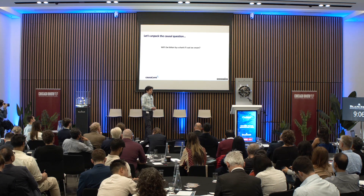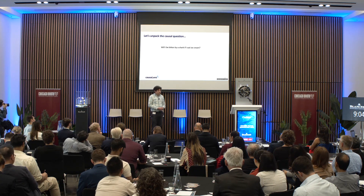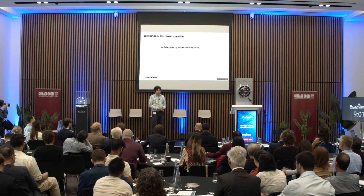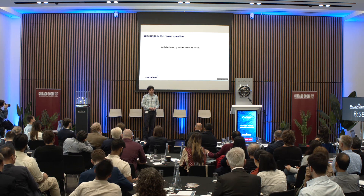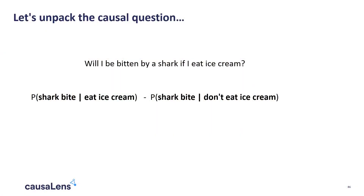Let's unpack the causal question: will I be eaten by a shark if I eat ice cream? This is the only formula in this talk — an attempt to formulate this mathematically. The question of whether I'll be bitten by a shark can be represented as: the probability of getting bitten by a shark if I eat ice cream, minus the probability of being bitten by a shark if I don't.